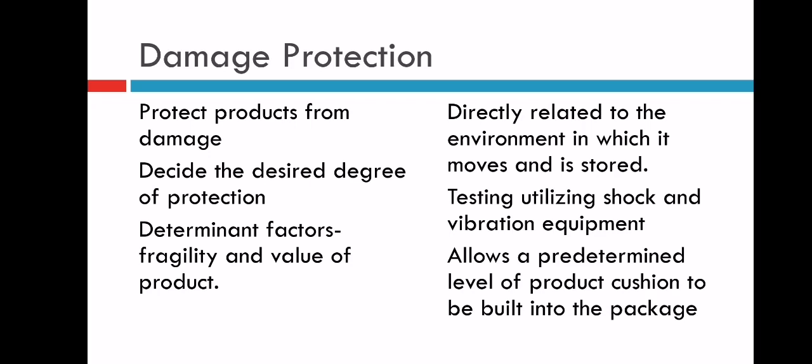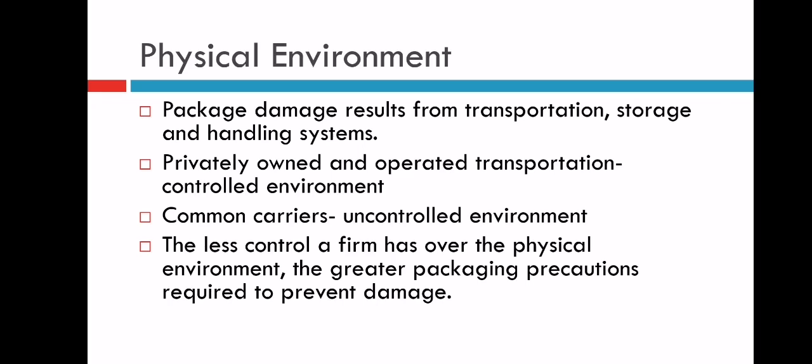Physical environment package damage results from transportation, storage, and handling systems. There are privately owned and operated transportation with controlled environment, and common carriers which are uncontrolled environment. The less control a firm has over the physical environment, the greater packaging precautions required to prevent damage. Companies either deal with the logistics part on their own or hire other people. If they are hiring common carriers or public transportation, you need to take more care for packaging. If you are moving products on your own, you have better control over movement and can better ensure damage protection.